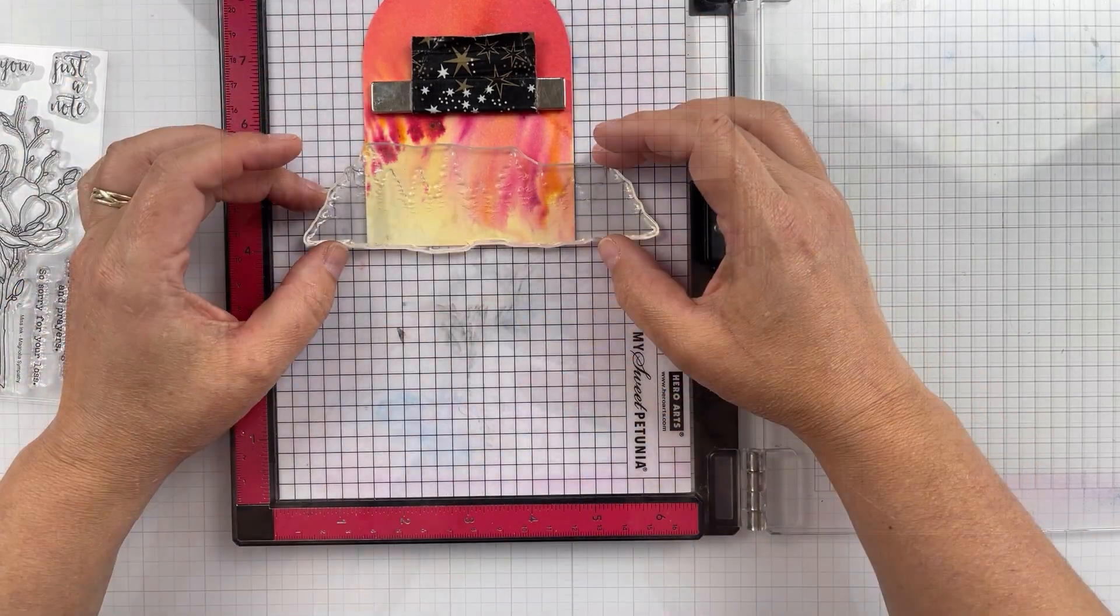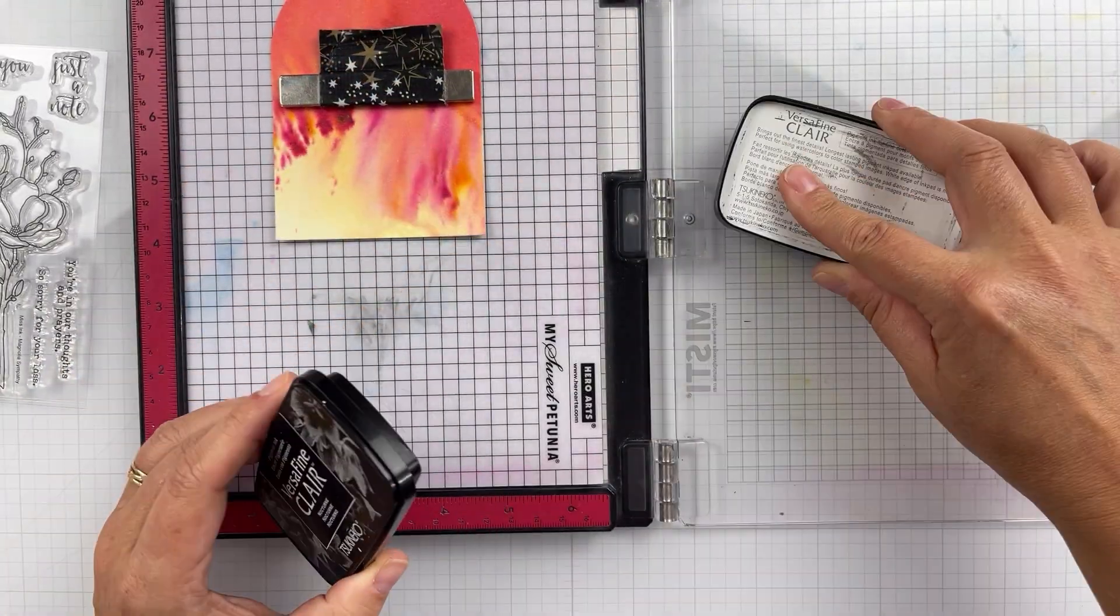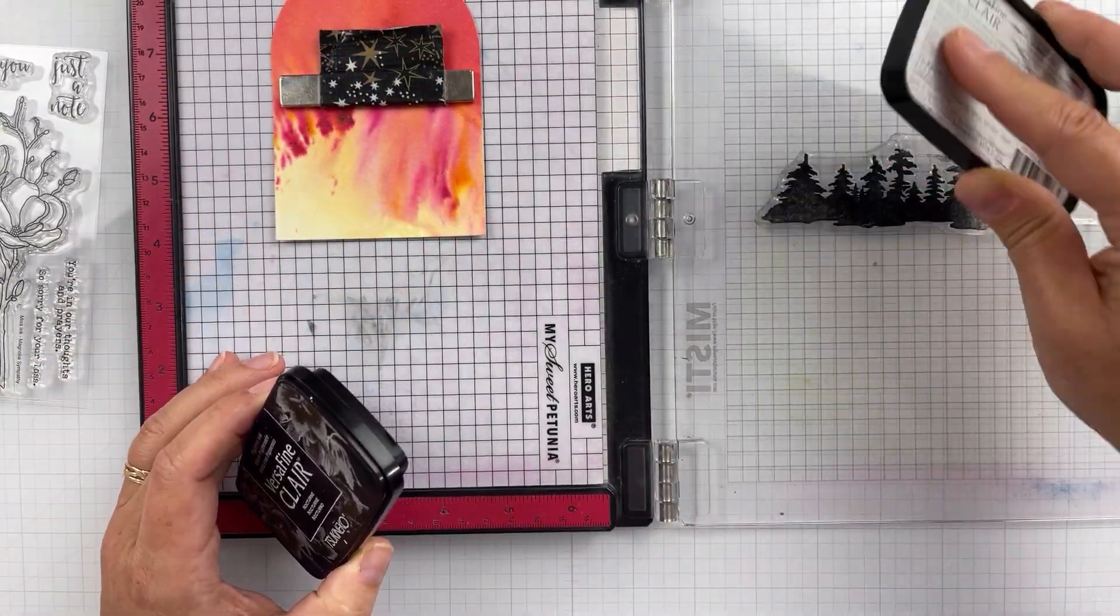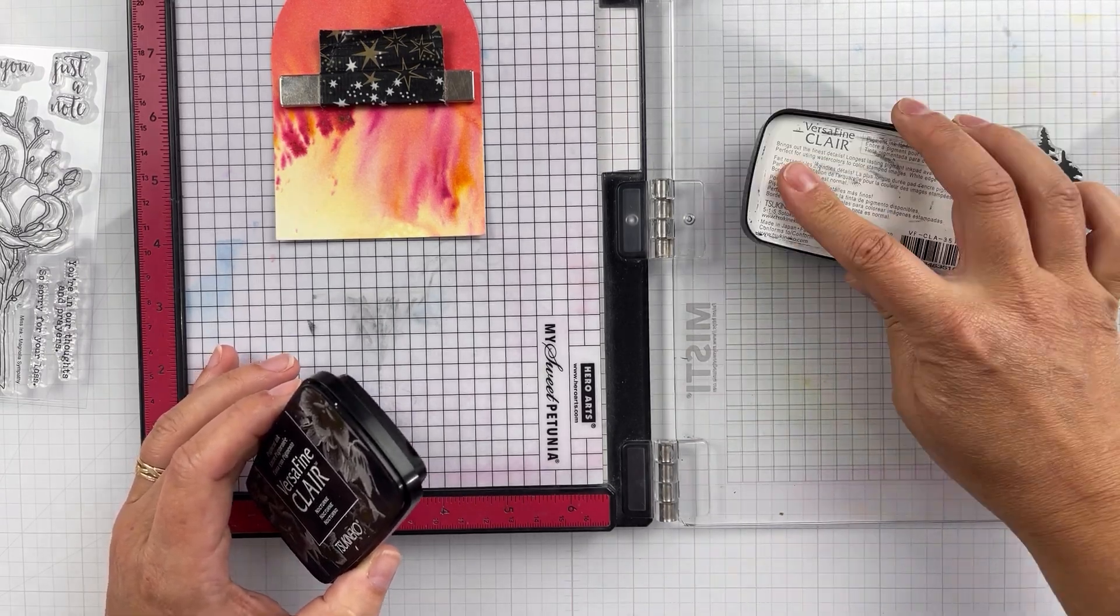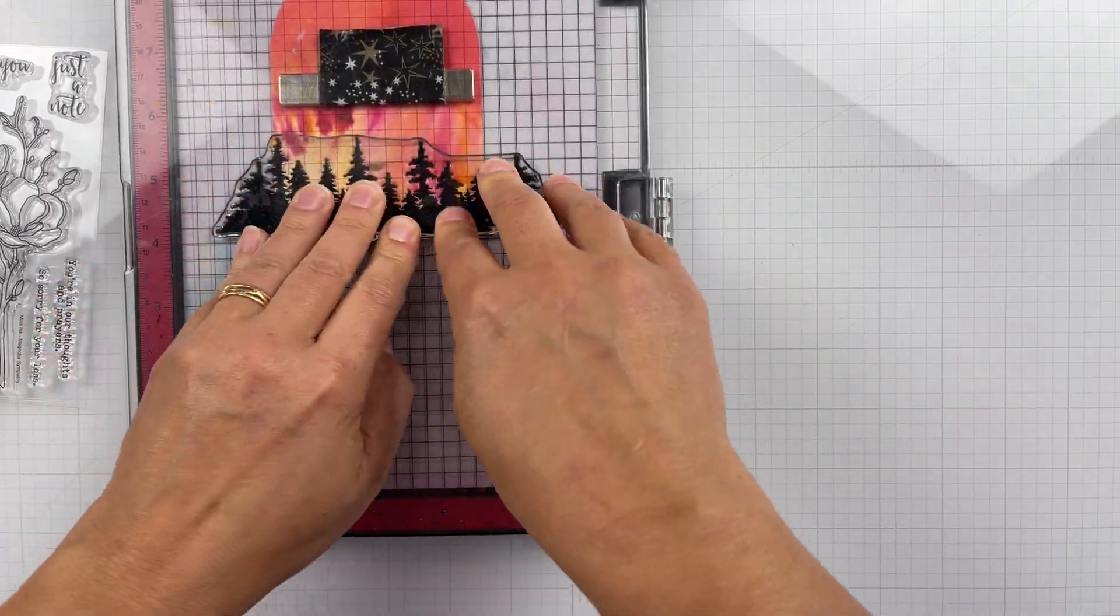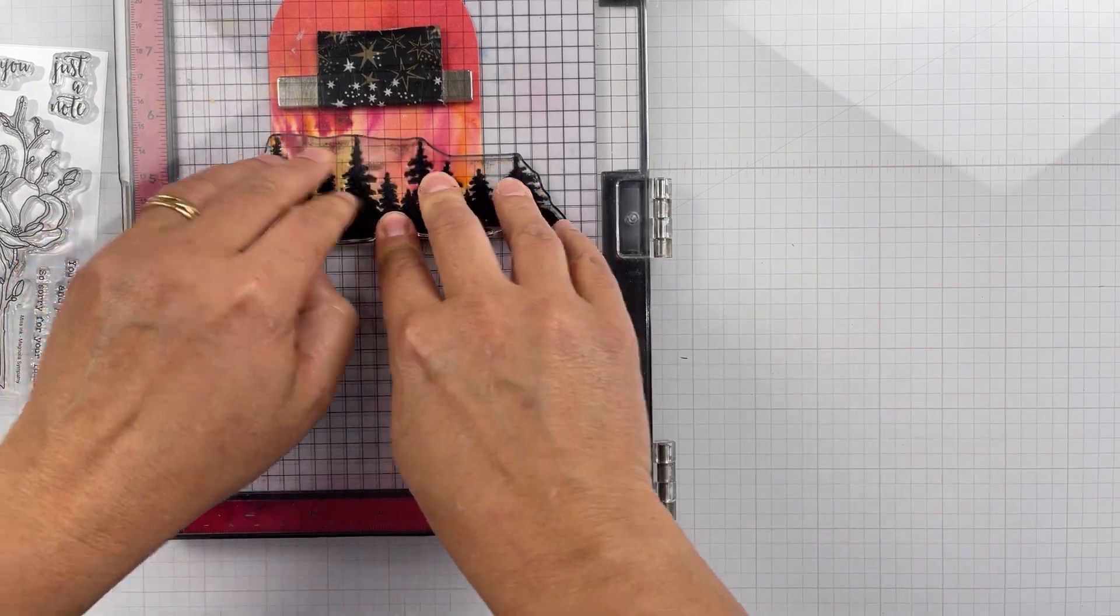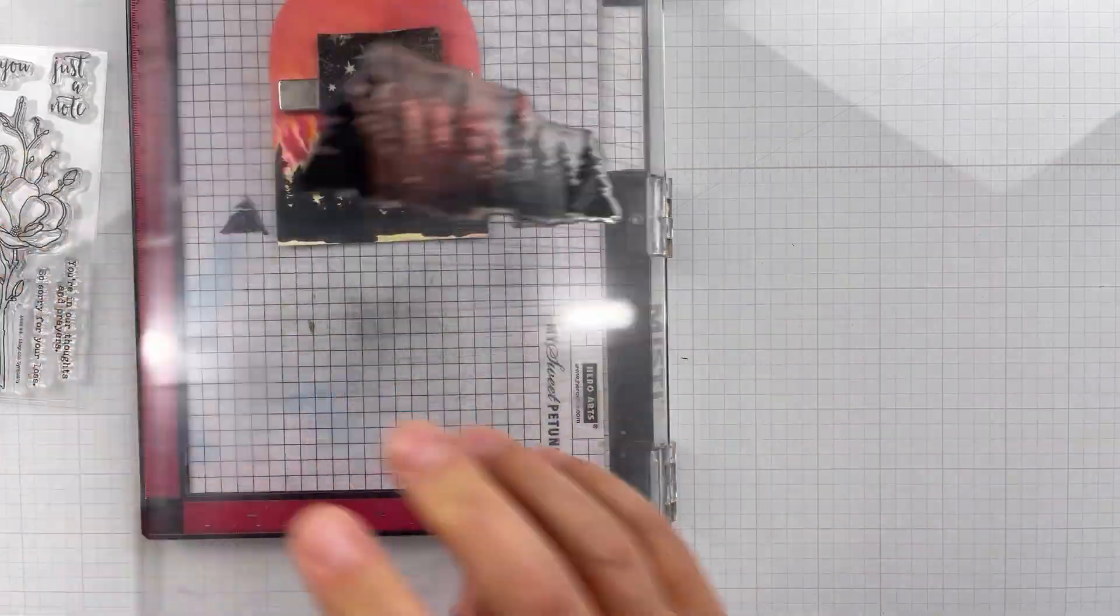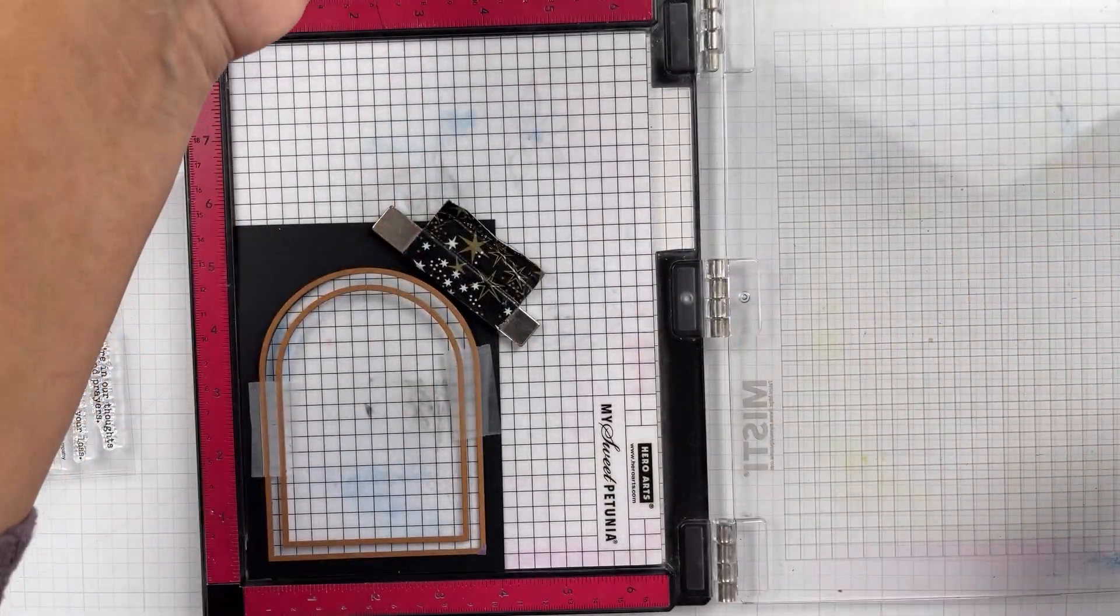But now we're going to do the stamping. I just used some VersaFine Clair Nocturne ink. Any black ink is going to work fine for this. I did not realize that my panel had moved a little bit, so when I went back in to stamp again, it's got like the double stamping halo. But it actually looks okay, so I went with it.